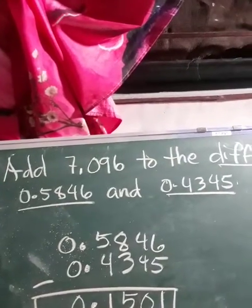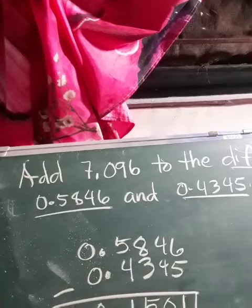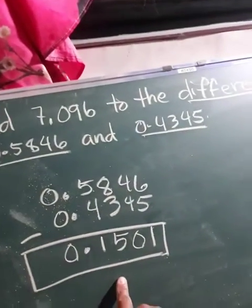Add 7.096 to the difference of 0.5846 and 0.4345. We already have the difference.